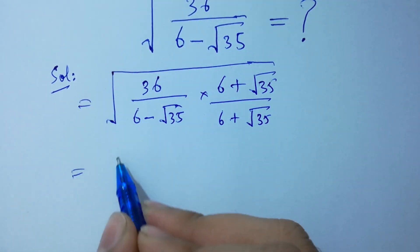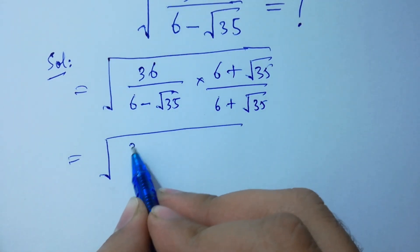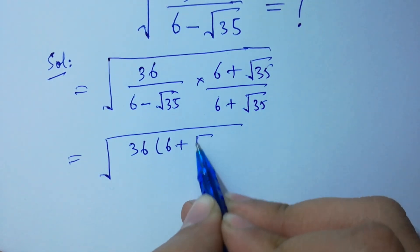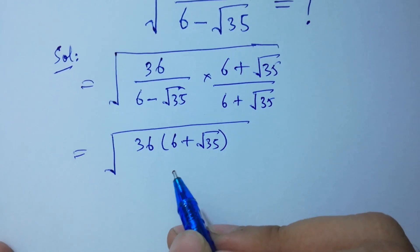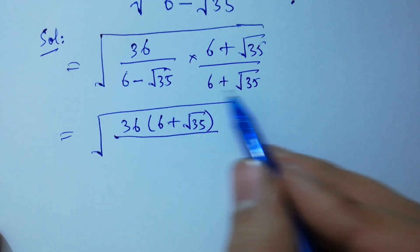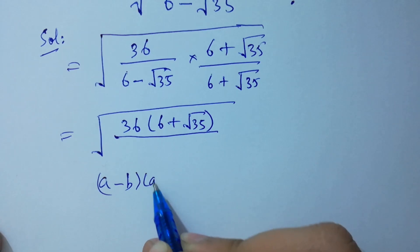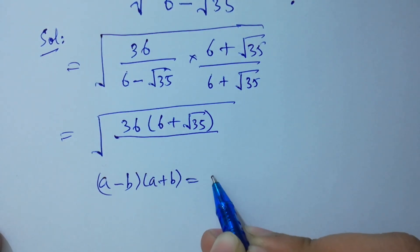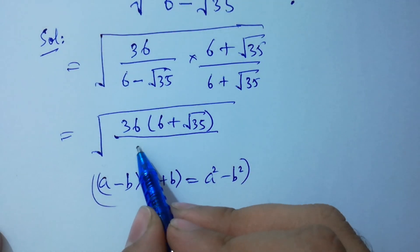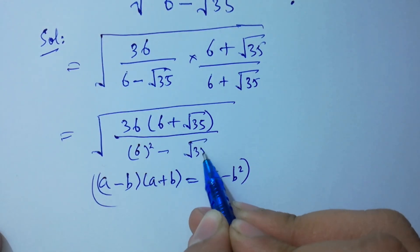Solving this, we have 36 times 6 plus square root of 35 in the numerator. The denominator is of the form (a minus b)(a plus b), which equals a squared minus b squared, so it becomes 6 squared minus square root of 35 squared.